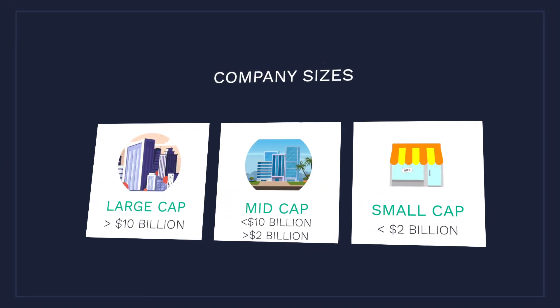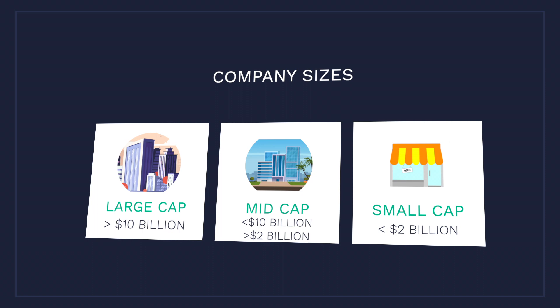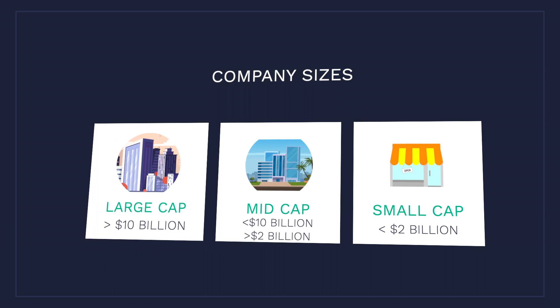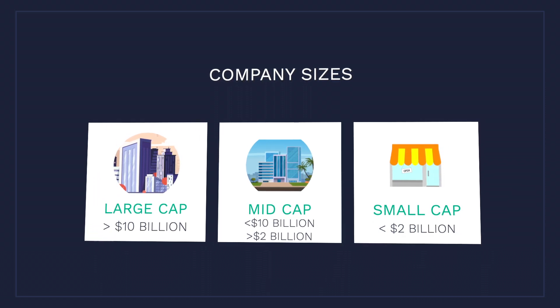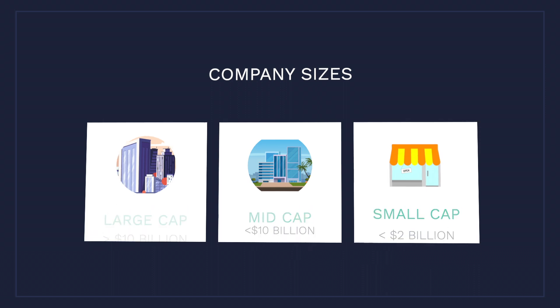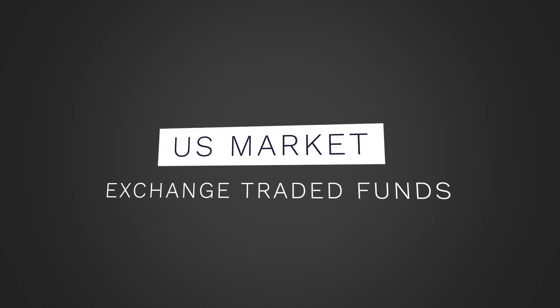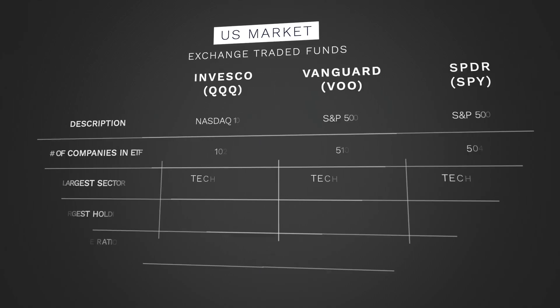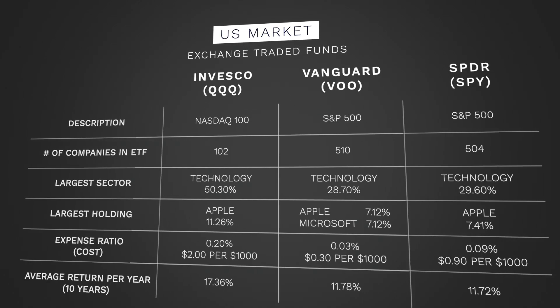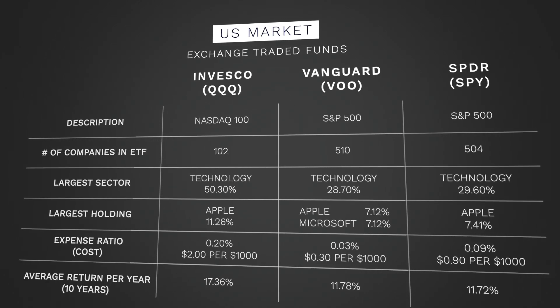You can find an ETF that focuses on large-cap companies, greater than $10 billion; mid-cap companies, between $2 billion and $10 billion; and small-cap companies, which are less than $2 billion. Three popular ETFs are Invesco's QQQ, Vanguard's VOO, and Spyder's SPY.